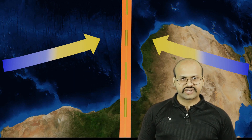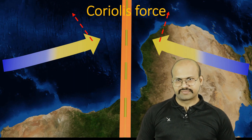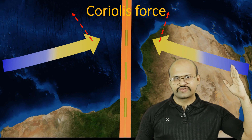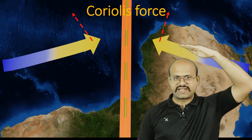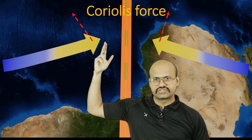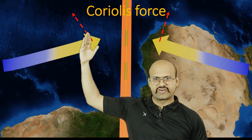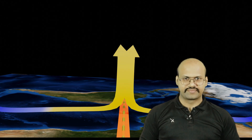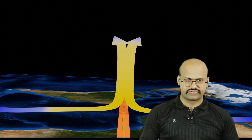These wind currents also face a deflection because of the Coriolis force. In the northern hemisphere, the Coriolis force deflects them in the rightward direction, while in the southern hemisphere the Coriolis force deflects them in the leftward direction. When these wind currents reach the low pressure belt, they cannot move forward but start rising up because of both equatorial heating as well as centrifugal force.